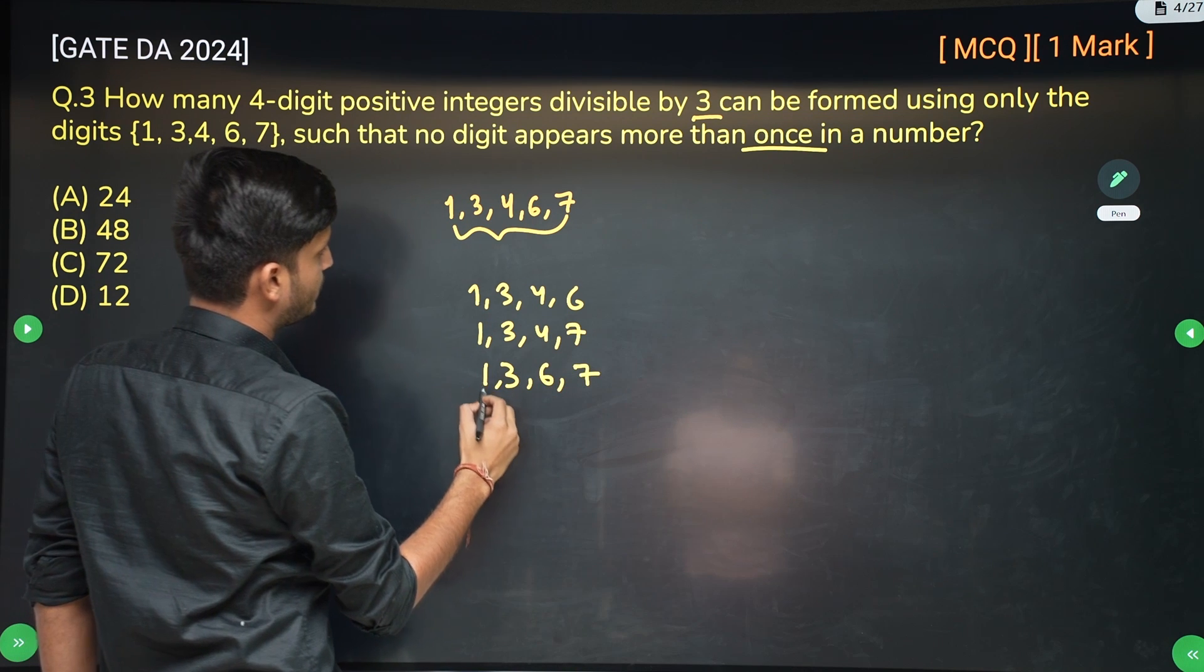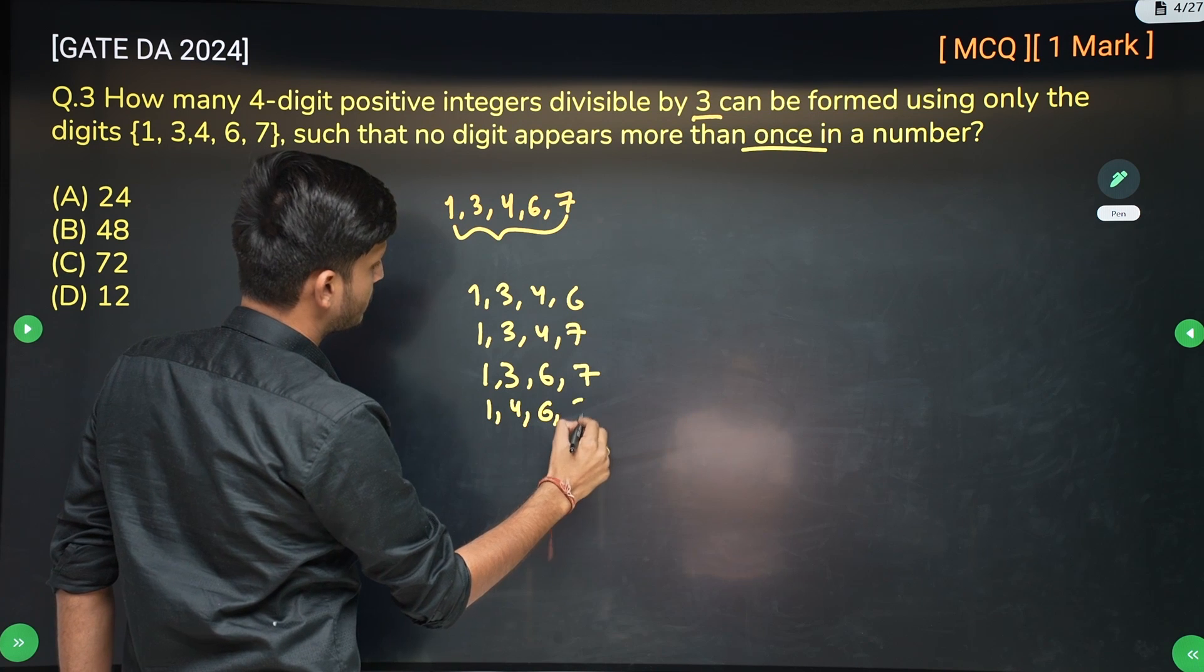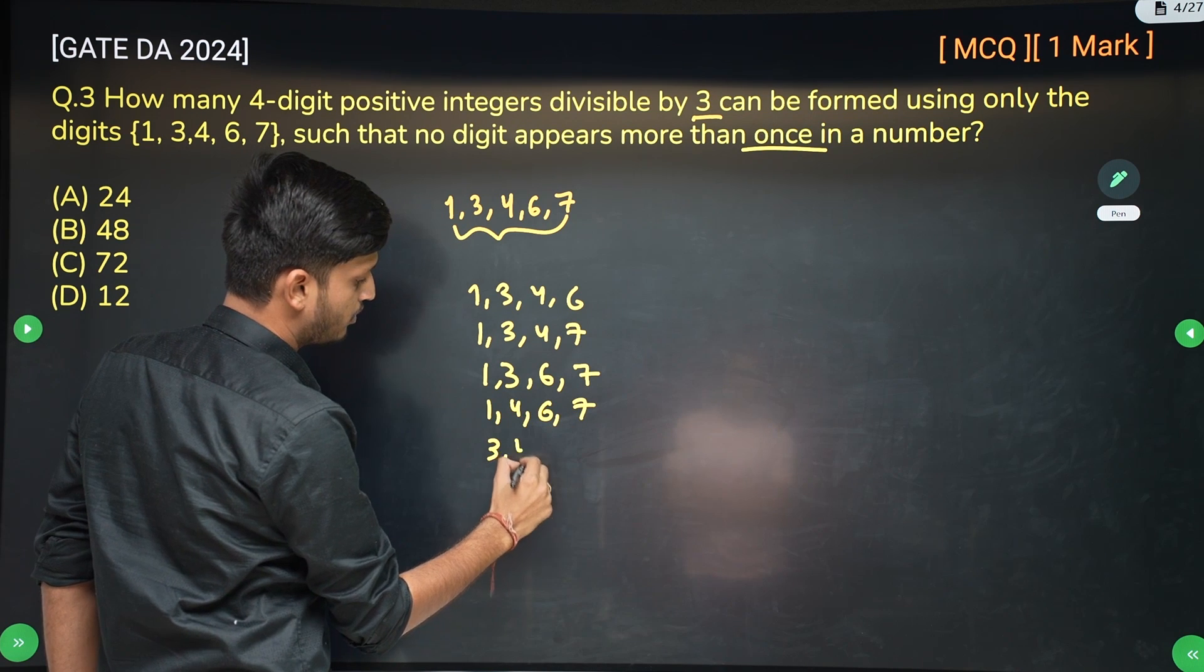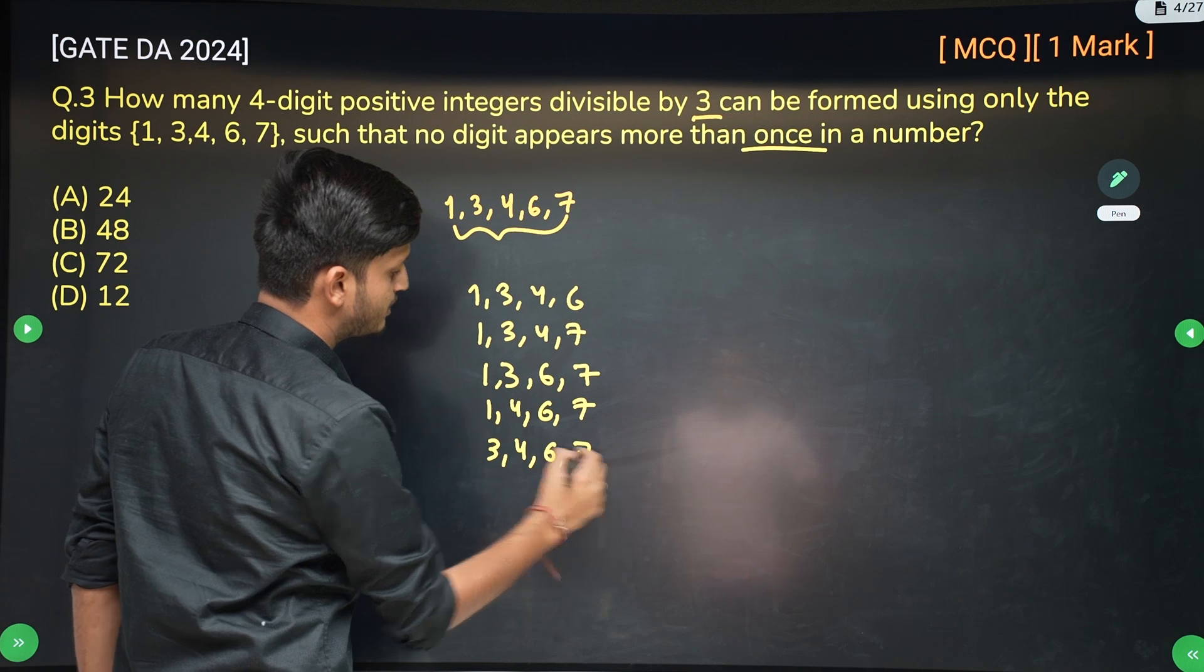Or I can select 1, 3, 6, and 7. Or we can select 1, 4, 6, and 7. Or we can select 3, 4, 6, and 7. So these are 5 possible selections.